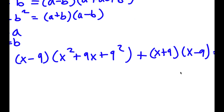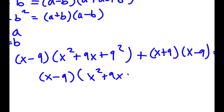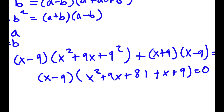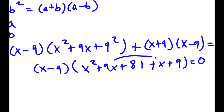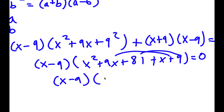Now I'm going to factor out x minus 9. So I have x minus 9 times x squared plus 9x plus 81 plus x plus 9, all equal to 0. Adding like terms — 9x plus x and 81 plus 9 — I get x minus 9 times x squared plus 10x plus 90 equals 0.